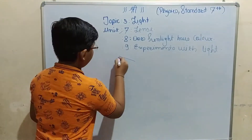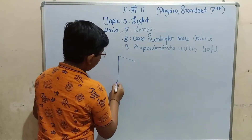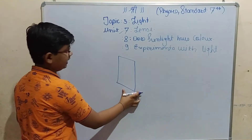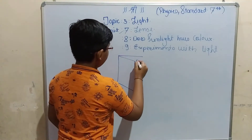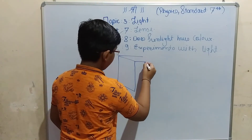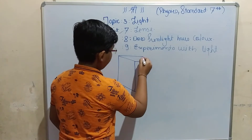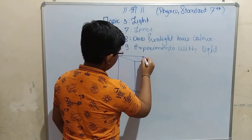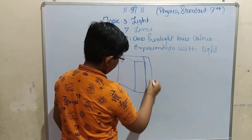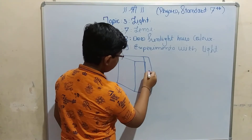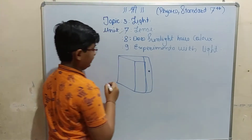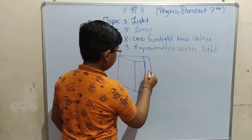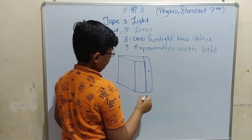In the pinhole camera we will take two cardboards like this. One screen over here joined with one black cardboard like this. This is one cardboard over here and this is another. And here is one small point from where only light can pass through.